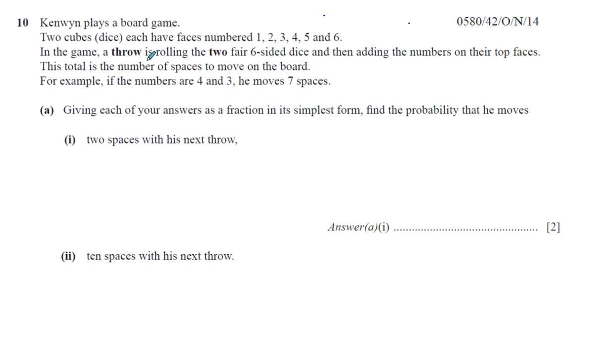In the game, a throw is rolling the two fair 6 dice and then adding the numbers on their top faces. So one throw is when you throw the two dice together and you add the numbers on their top faces. For example, if you throw two dice and on the top of one dice you have two dots, and on the top of the other dice you have five dots: one, two, three, four, five. You add them. You add the two numbers, you get seven. So on that particular throw, the score you get is a seven.